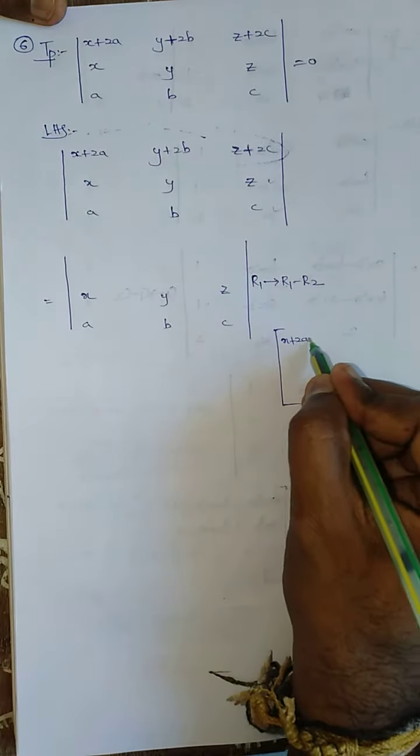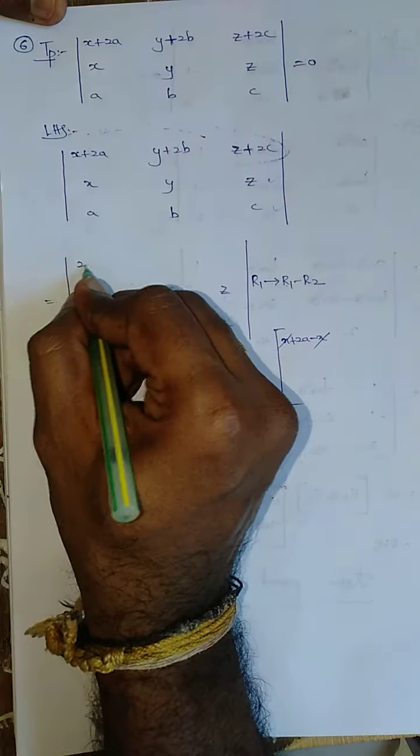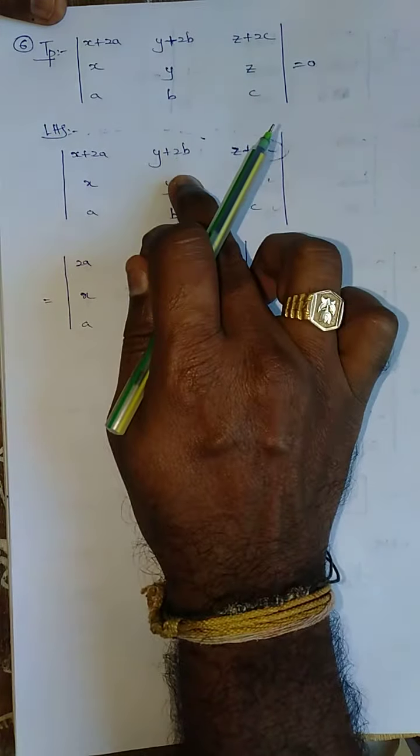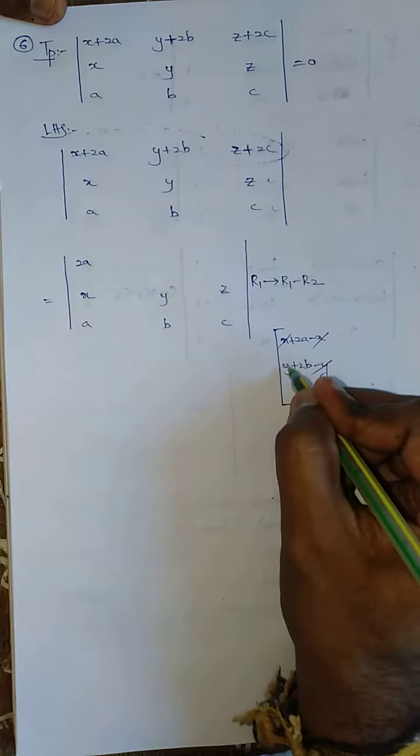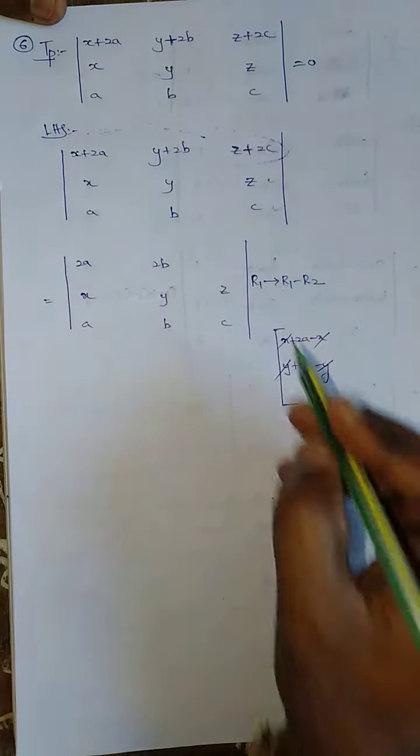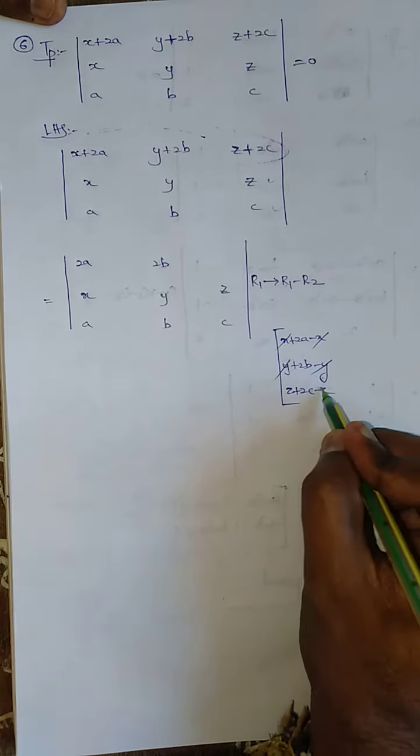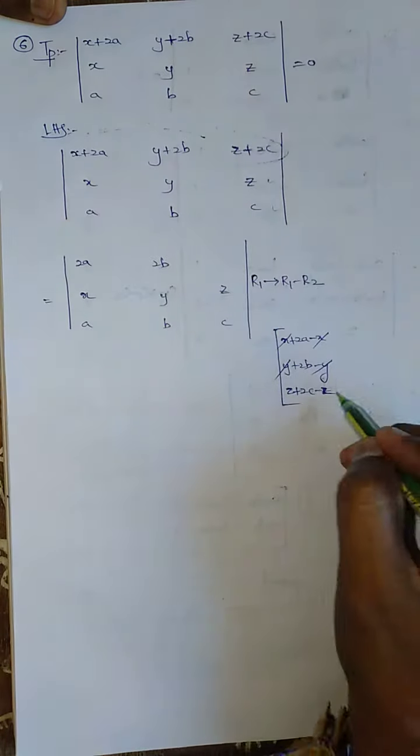X plus 2A minus X both will be cancelled, so answer is 2A. Y plus 2B minus Y both will cancel, going to be 2B. Z plus 2C minus Z both will cancel, going to be 2C.